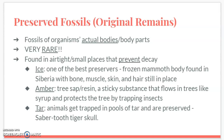Preserved fossils, or original remains, are fossils of organisms' actual bodies and body parts. These are very, very rare. They are usually found in airtight or small spaces where decay hasn't happened. There are three main substances we can find preserved fossils in. The first is ice — I'll show a slide with a frozen woolly mammoth found in Siberia that still has some bones, muscles, skin, and hair.